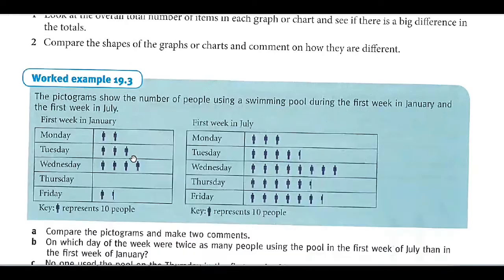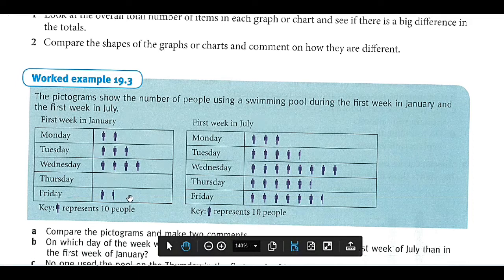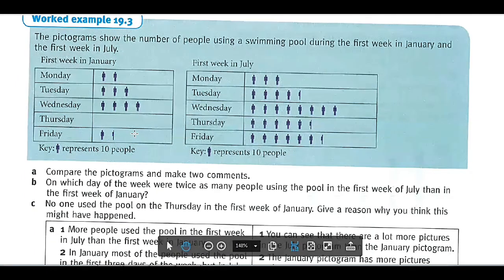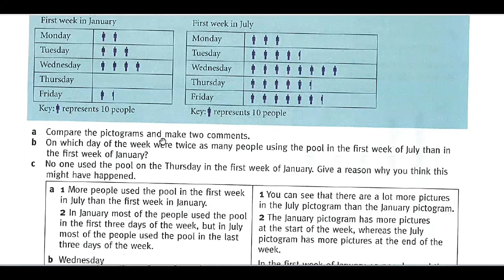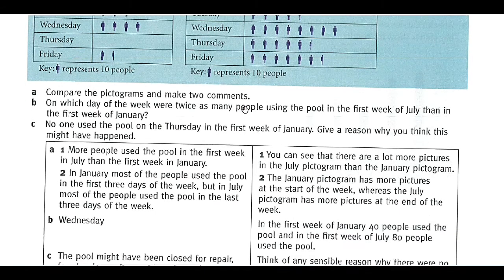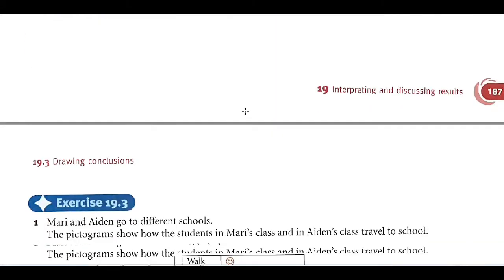Now 19.3: drawing conclusions. Here is your pictogram that shows the swimming pool during the first week in January and the first week in July. Which week do more people like swimming compared to not swimming? Here one person shows 10 people, so here 20, here 30. July: the number of people increased in the month of July compared to January. You can compare this and solve all of these. Here is your conclusion.